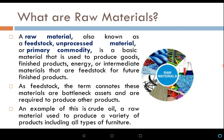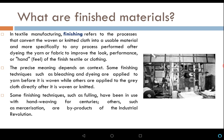An example of this is crude oil. Crude oil is a raw material used to produce a variety of products — all types of products, including various types of furniture. In the adjoining picture you can see various types of raw materials which are used to produce many different kinds of products.